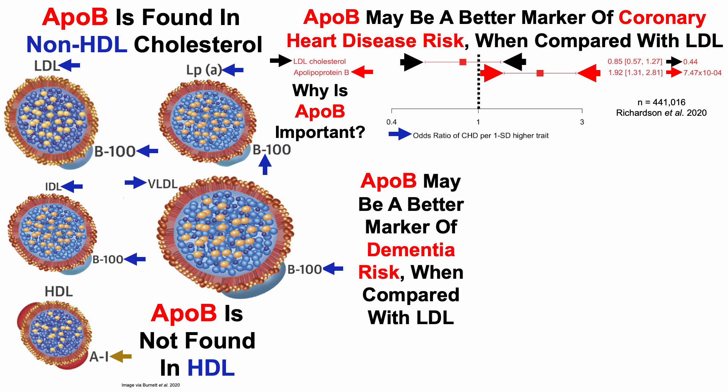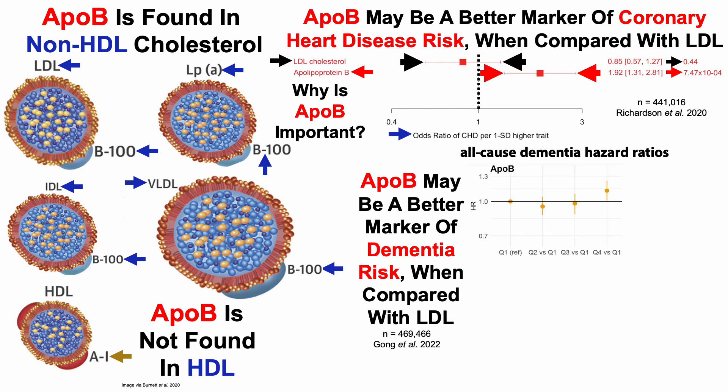Note that APO-B may be a better marker of dementia risk, too, when compared with LDL. And that's what we'll see in this study of about 469,000 people that looked at all-cause dementia hazard ratios. Note that all-cause dementia includes Alzheimer's disease, vascular dementia, and other dementias.